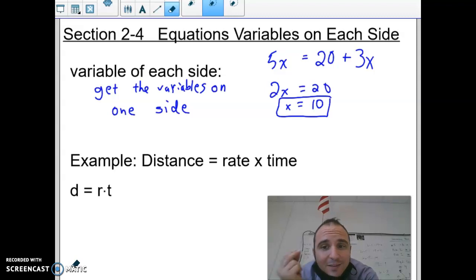A variable on each side means you want to get the variables onto one side. Here's a very quick and easy example. We have a 3x over here, we want to move it to the other side. You don't just move the 3, you move the whole thing. So it's 3x subtracted from 5x is 2x, and x equals 10.